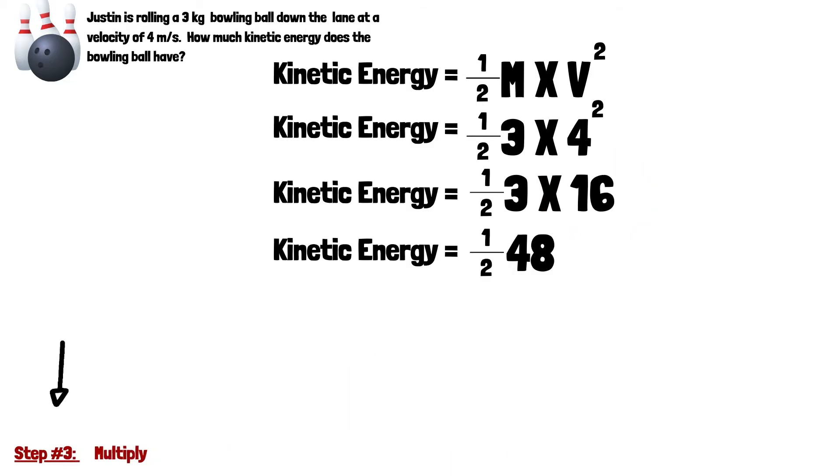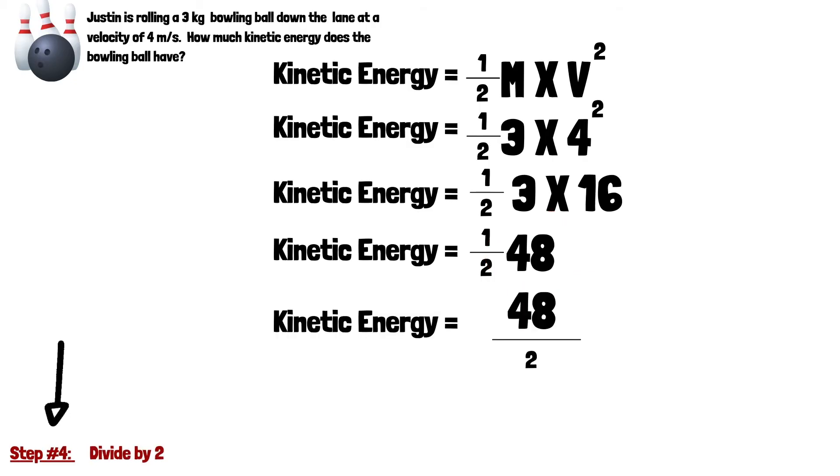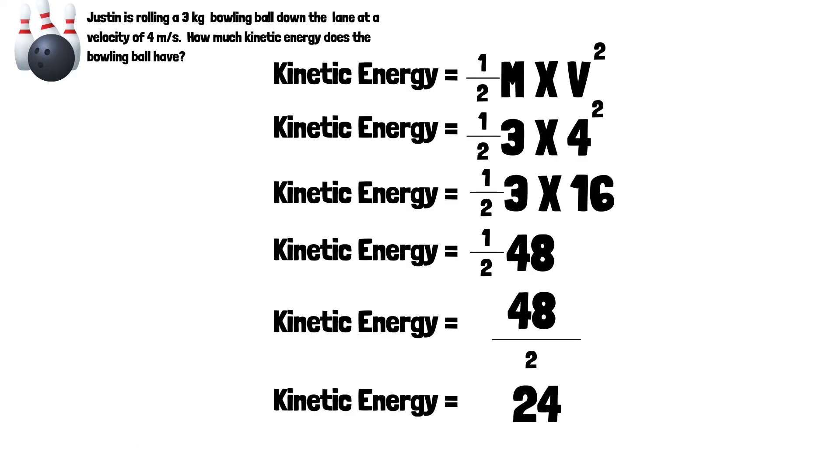The next step, we have to multiply. So we're going to multiply 3 times 16 and that's going to give us 48. In step number 4, we're going to take that 48 and it says 1/2 of 48. Another way to do this is to simply divide by 2. So 48 divided by 2 is 24.